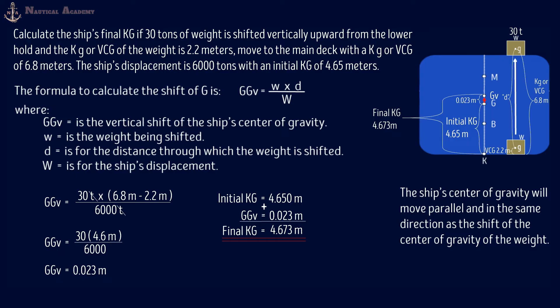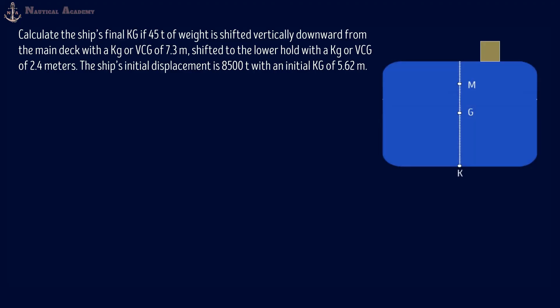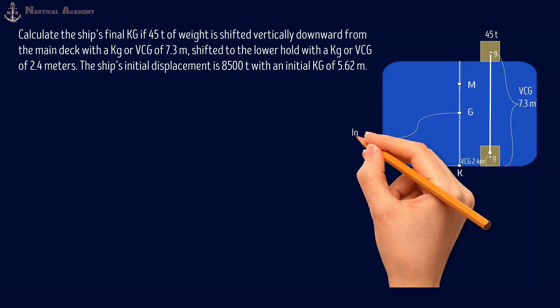Let us now go to the next exercise of calculating the vertical movement of the ship's center of gravity and final KG when shifting a weight already on board. Could you do a small favor for me to like and share this video? And if you are new to this channel, do not forget to click the subscribe button and hit the notification bell. Thank you very much. The next exercise: Calculate the ship's final KG if 45 tons of weight is shifted vertically downward from the main deck with a KG or VCG of 7.3 meters, shifted to the lower hold with a KG or VCG of 2.4 meters. The ship's displacement is 8,500 tons with an initial KG of 5.62 meters.